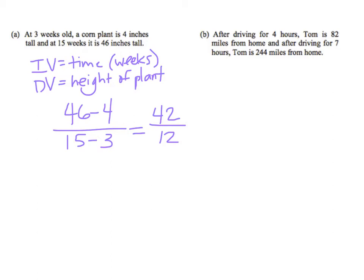Okay, so let's simplify that fraction. 42 over 12, let's divide them both by 6, leaving me 7 over 2, which is 3 and a half. And let's go ahead and make it a decimal, 3.5. Now, what does that mean? Again, let's put the units on it. So it's dependent over independent units. So it's inches per week. How many inches per week is it changing? 3.5. So the rate of change is 3.5 inches per week. That's how fast it's growing.